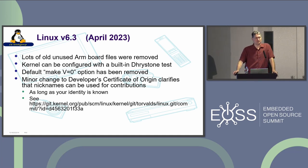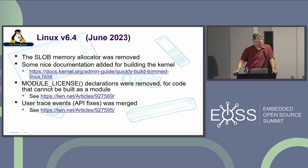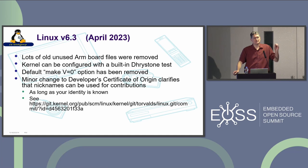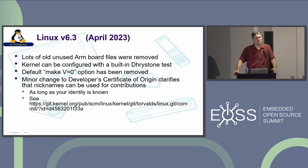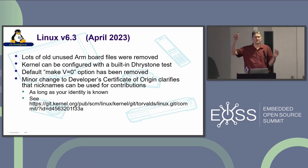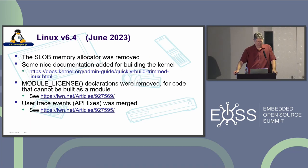The make V=0 option was removed. There's a trend to make the kernel much more chatty with warnings and debug messages, and you're not allowed to turn off the messages. If you're a kernel developer and you've written code that causes compiler warnings, you have to go fix them because Linus wants a clean build. It's taken a long time to get to the point where there are so few warnings that it's just not a bunch of noise that people ignore — but that's an important attribute for upstream. There was also a minor change to the developer certificate of origin.